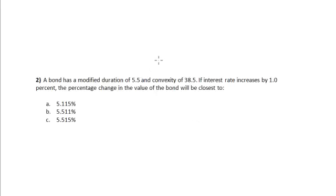A bond has a modified duration of 5.5 and a convexity of 38.5. If the interest rate increases by 1%, the percentage change in the value of the bond will be closest to: